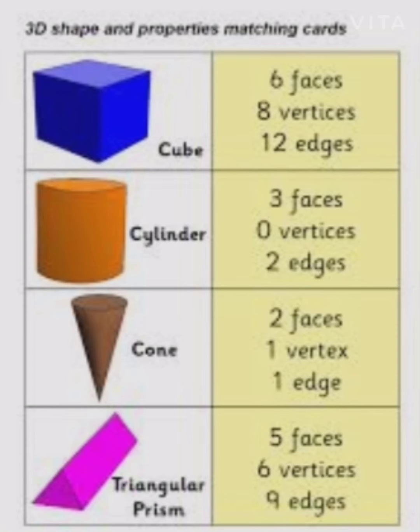Attributes of 3D shapes. Cube: six faces, three vertices, two edges. Cylinder: three faces, two edges, zero vertices.